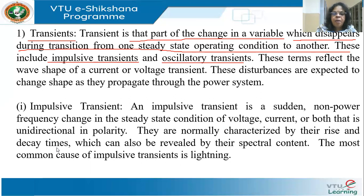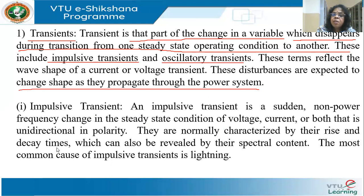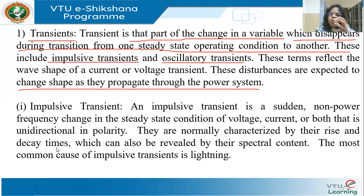The names tell you what they mean. An impulse is a signal with a steep rise in magnitude that quickly dies down. Oscillatory means oscillations continue. These terms reflect the wave shape of a current or voltage transient. These disturbances are expected to change shape as they propagate through the power system because an electrical signal is an electromagnetic wave, and electromagnetic waves get attenuated and phase-shifted as they propagate through a medium — dependent on the propagation constants and the material used.